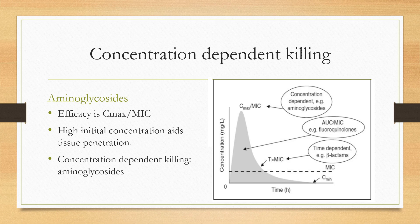There is a minimum inhibitory concentration (MIC). The minimum inhibitory concentration of an antibiotic is the minimum concentration in serum required to prevent the growth of a microorganism in the blood. The efficacy in concentration-dependent killing depends upon how many times the maximum concentration exceeds the MIC. So efficacy is the ratio of Cmax to MIC, and high initial concentration drives tissue penetration.